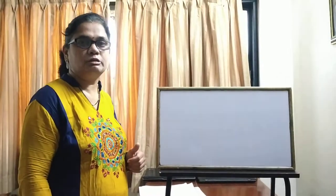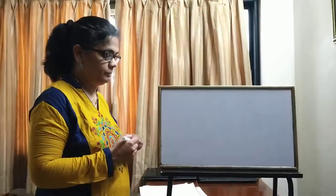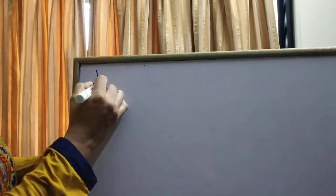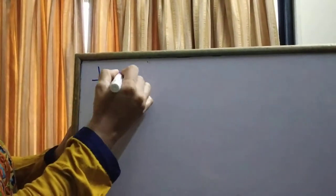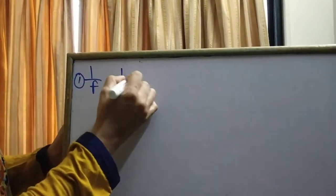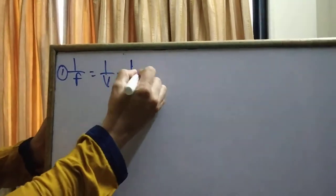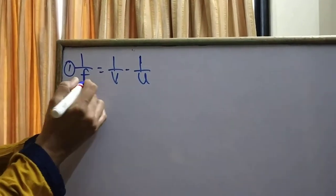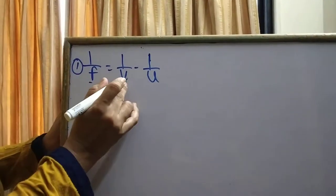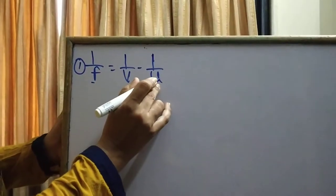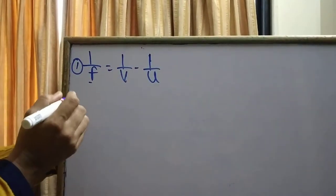Today we are going to study the numericals based on the lens formula. The lens formula is: 1 upon f is equal to 1 upon v minus 1 upon u, where f is focal length, v is image distance, and u is object distance.